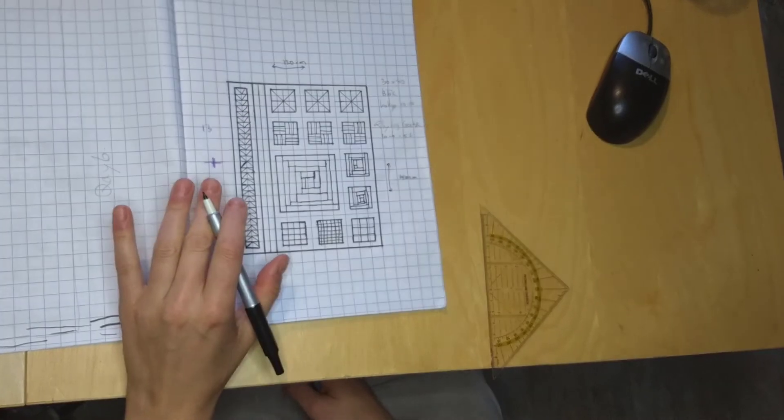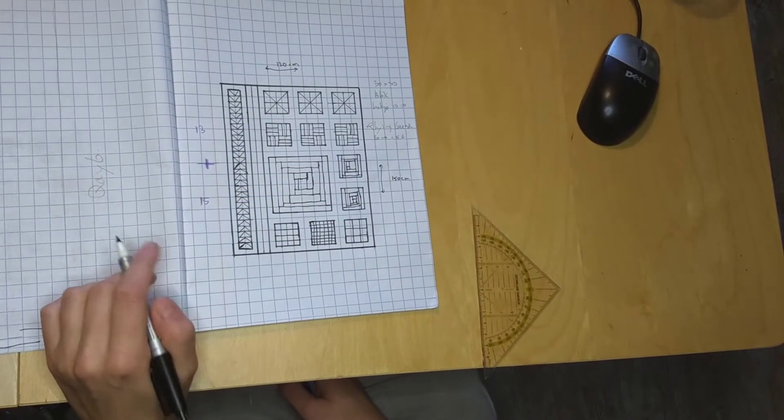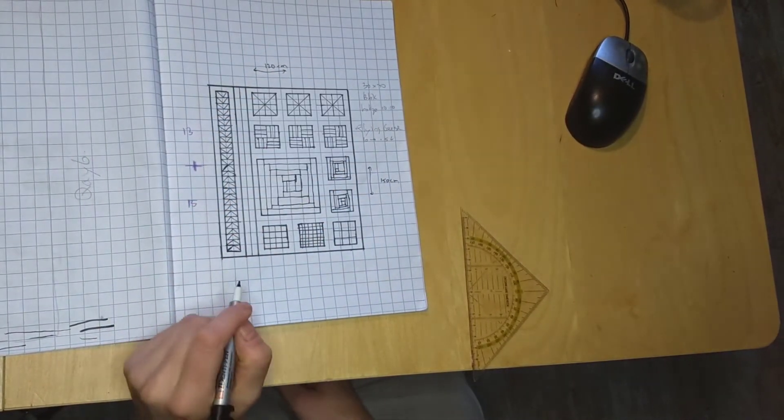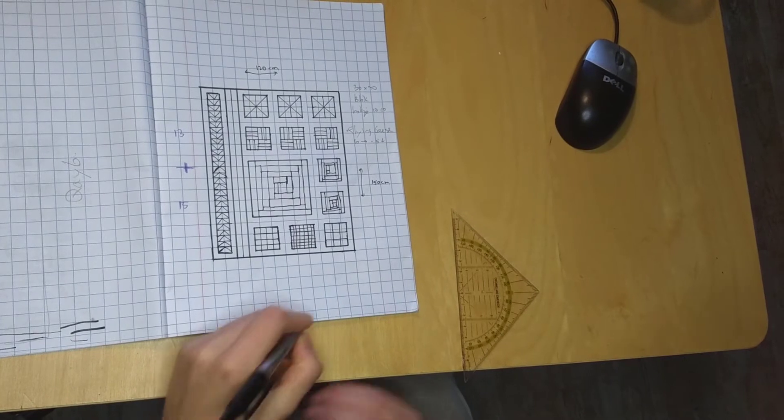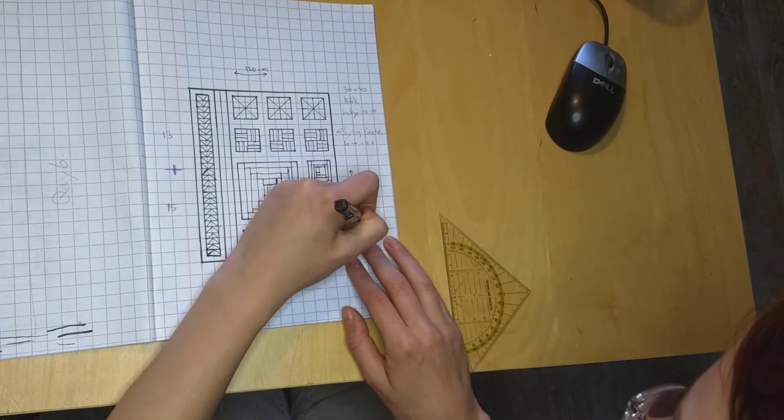So I drew a raster for you with the blocks in it, and this is 12 by 15 blocks, so every little square is one centimeter. Like this.